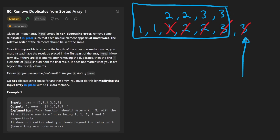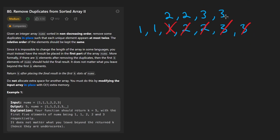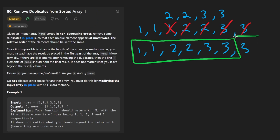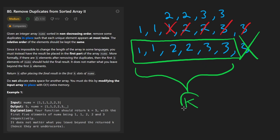Now, when we say remove from here, we're not actually deleting that memory or even overwriting the value in that position — we just consider it deleted. Our actual output array will look like: one, one, two, two, three, three. But we need some way to indicate that these are the only real values. So what we do is return an integer indicating the size of this portion of the array, which this problem refers to as K.